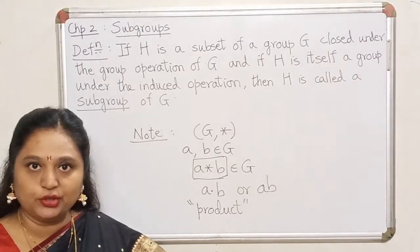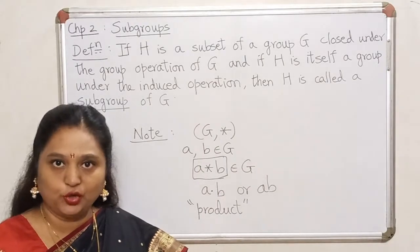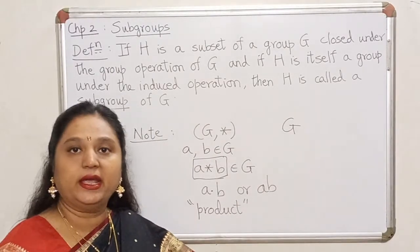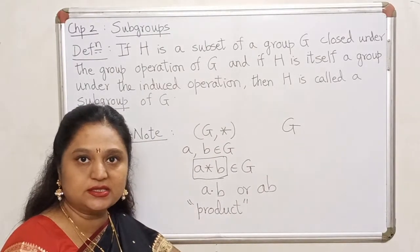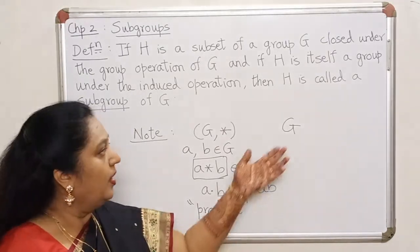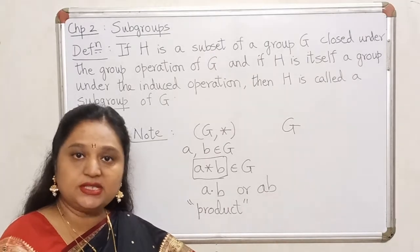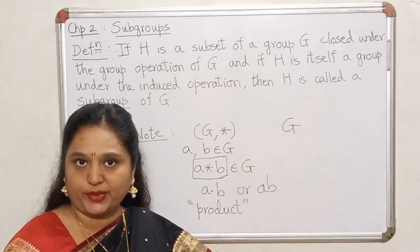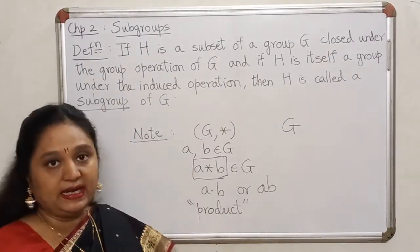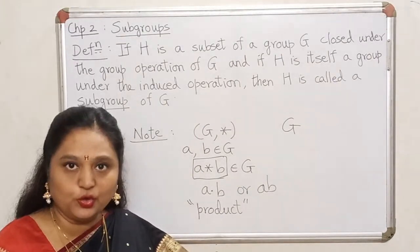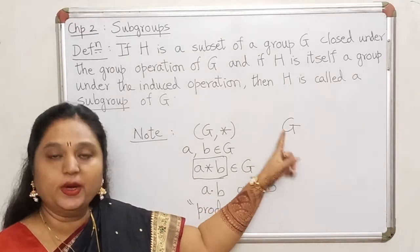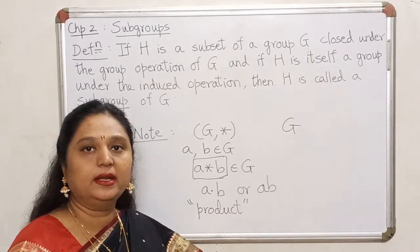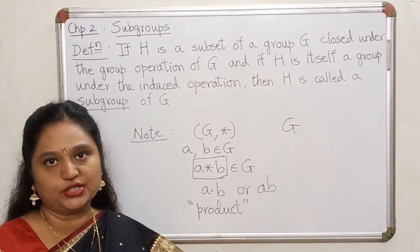We are also going to do one more thing: instead of every time writing 'let G comma star be a group,' we will simply say that G is a group. This is only for convenience of the terminology. When I say G is a group, there still is a binary operation on it — the understanding is that there is some binary operation on it. So we will simply use the notation 'let G be a group,' with the tacit agreement that it is not just a set but there is some binary operation working on it.